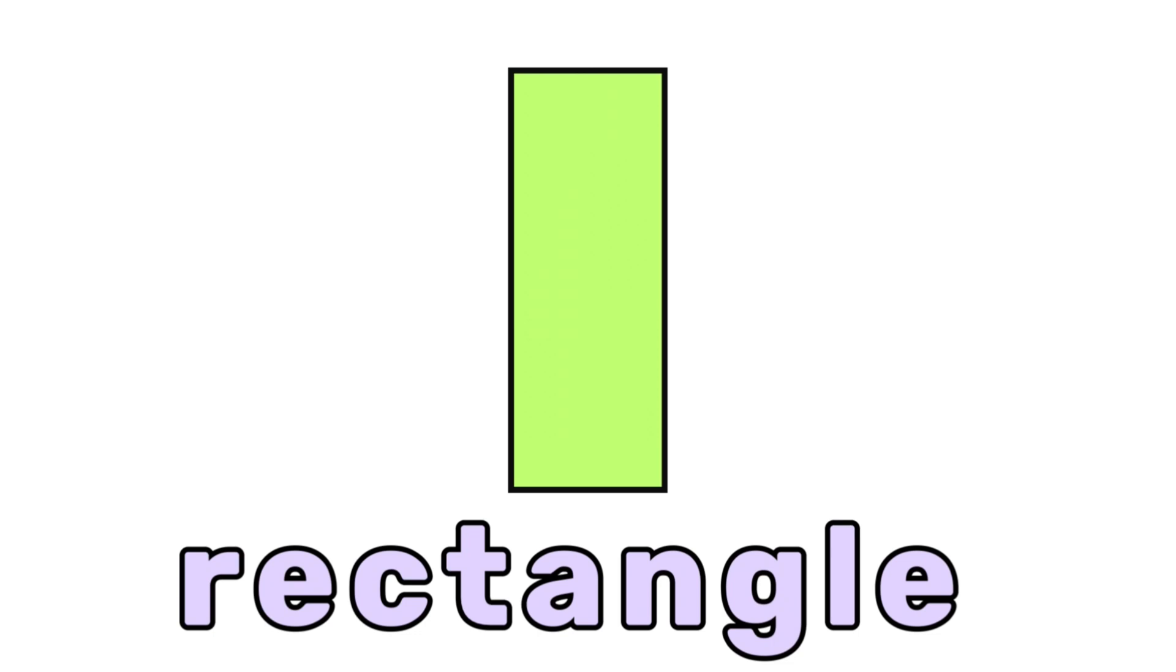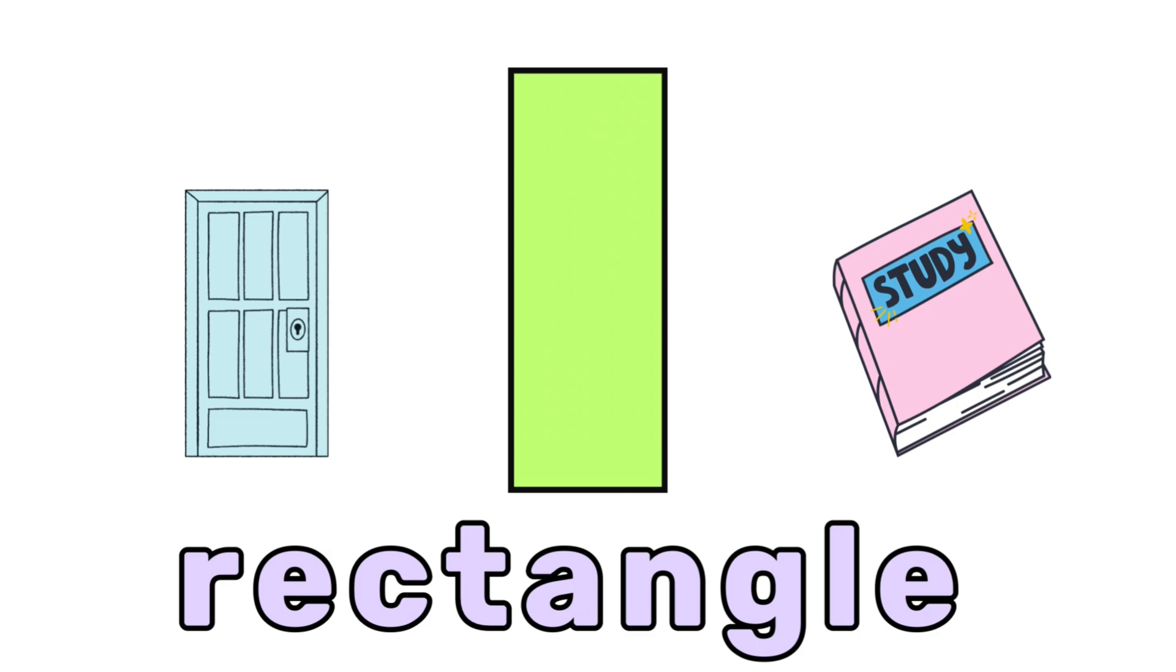This is a rectangle. Can you say rectangle? A rectangle has four sides. Two sides are long and two sides are short, like a door or a book. Say it with me. Rectangle.